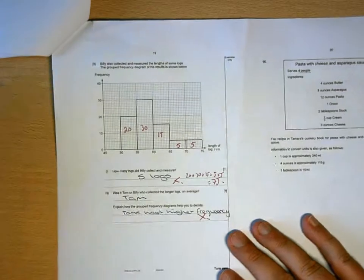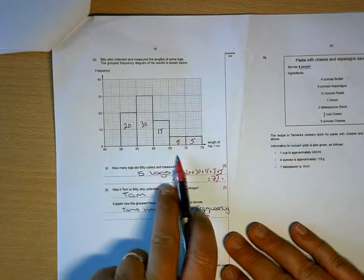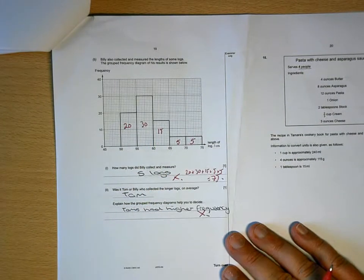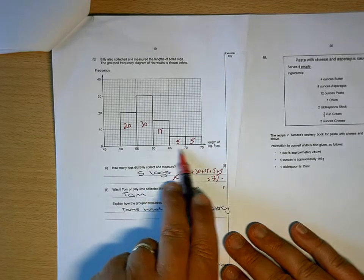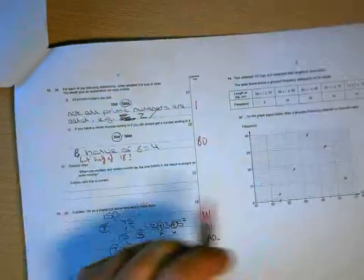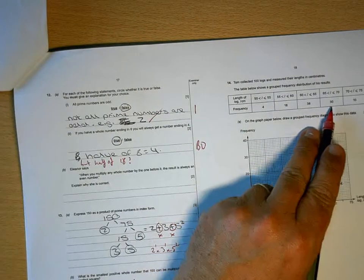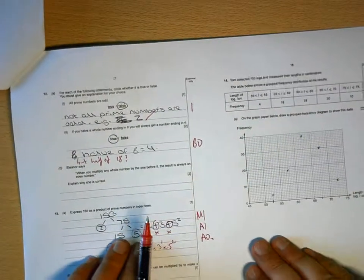Not enough to say he has a higher frequency. The difference is his higher frequencies are in the longer lengths. So if you see here, Billy has only got 10 logs bigger than 65 centimeters, whereas Tom has got 40 logs bigger than 65 centimeters.